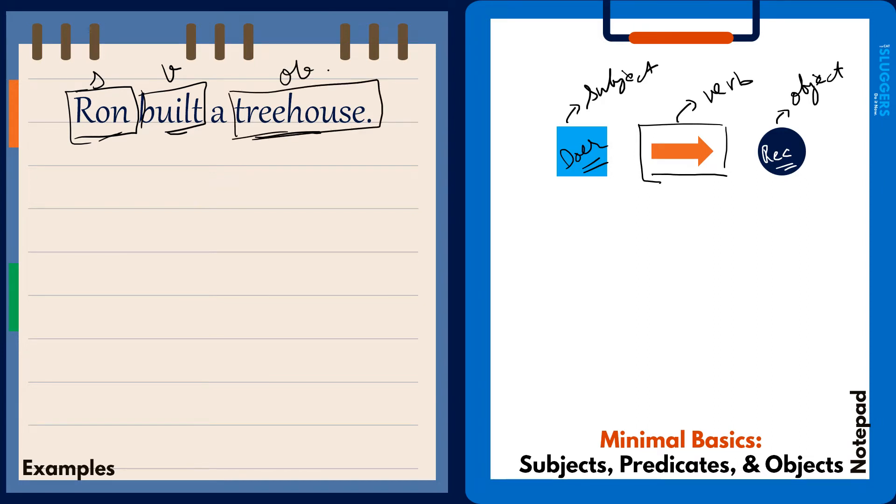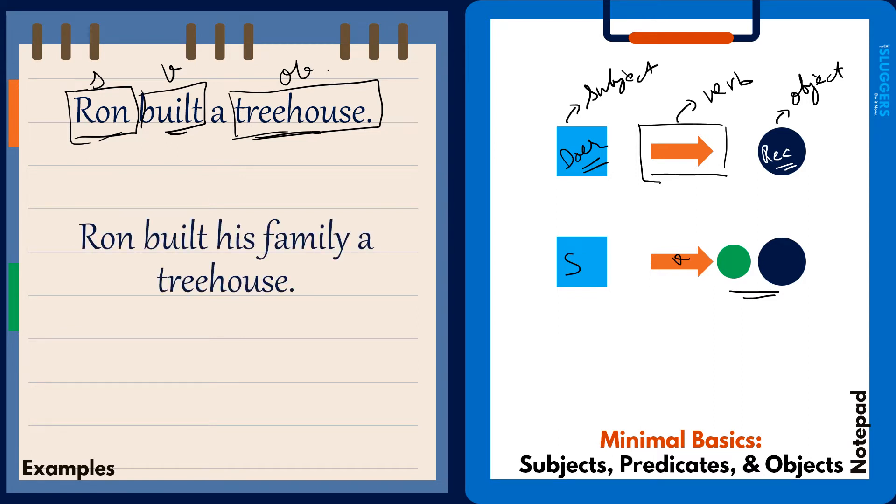Sometimes you'll also have two objects on the receiving end. You have one subject, one verb, and then instead of one object you'll have two objects. What would that sentence look like?